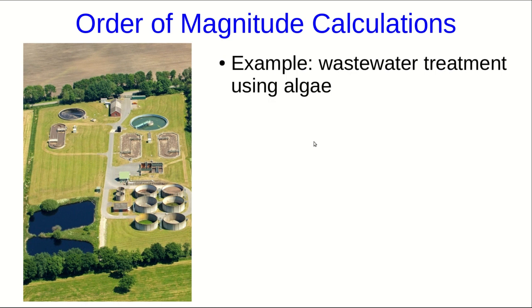I want to finish by talking about order of magnitude calculations. There's a supplementary video where I talk about how to do them and give an example. Right now I just want to talk about why we do order of magnitude calculations. For many students that's not obvious other than because your professor asked you to. Suppose you're designing a wastewater treatment plant that uses algae. One thing you would need to know is the gas exchange rate of the algae.